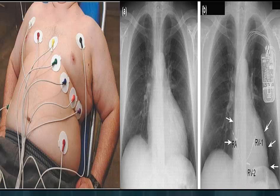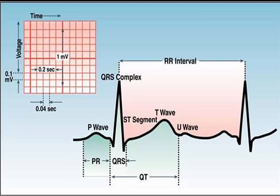A chest x-ray is done to detect enlargement of the heart and pulmonary congestion. A quick review: the P wave represents sequential activation — the depolarization of the right and left atria. The QRS complex represents right and left ventricular depolarization; normally the ventricles are activated simultaneously.